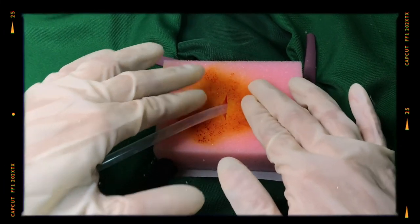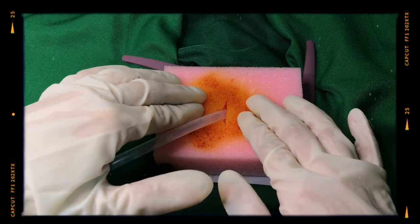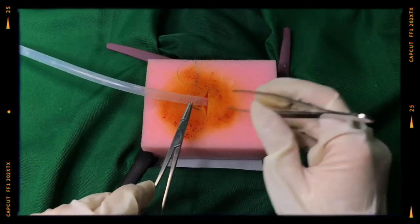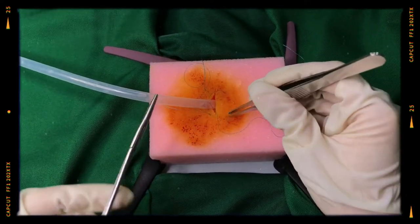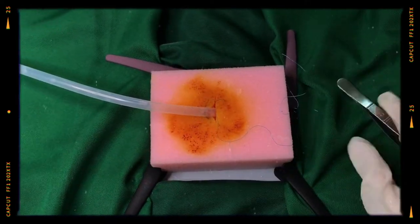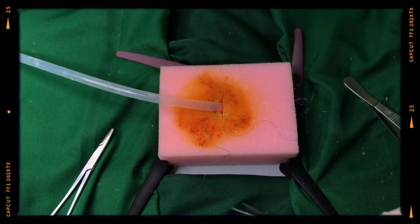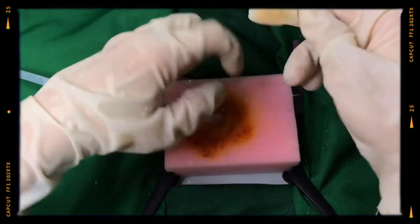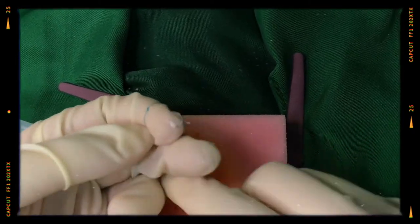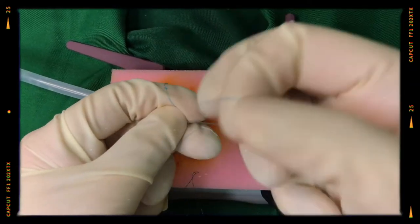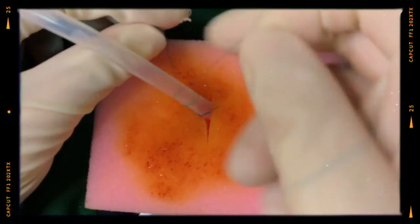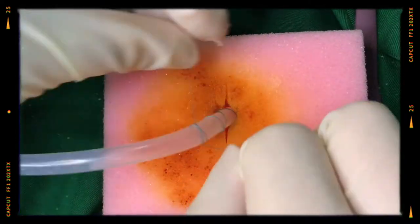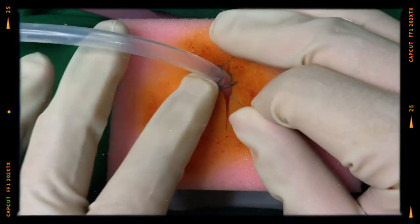Palpate superiorly and inferiorly to ensure that the tube has entered the chest. Suture the tube to the skin with a silk suture by placing a horizontal mattress. Cut the needle and put it away to avoid puncture wounds. Tie the suture in place tight to the skin. Wrap the ends in opposite directions around the tube to form a series of X's until to at least 4 loops around the tube. Push the suture down to the skin edge.